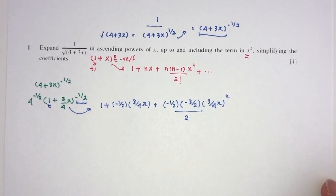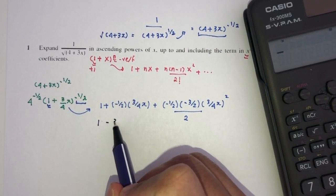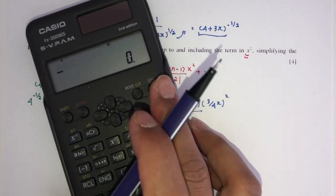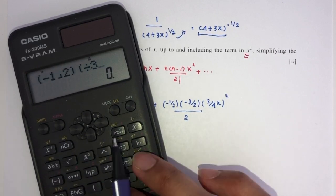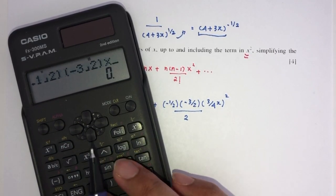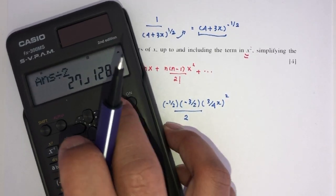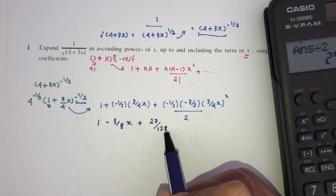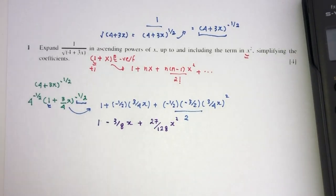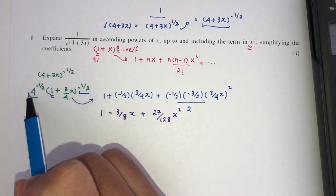Now, simplify, let's see what happens. You can always use your calculator because why not? You don't want to be making silly mistakes. Here you have, that would be 1 minus 3 over 8x, here we have 1, minus 1 over 2 times minus 3 over 2 times 9 over 16.